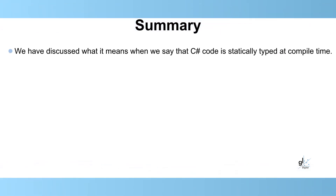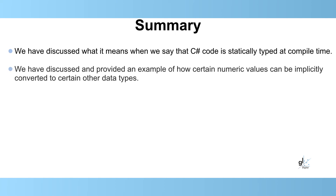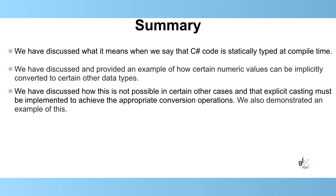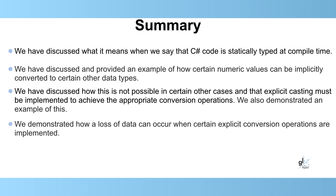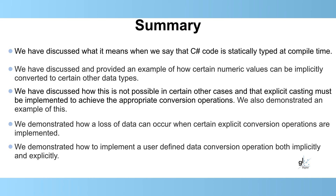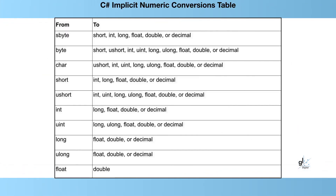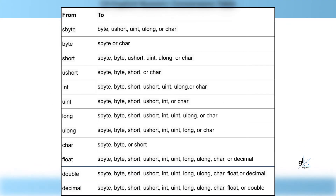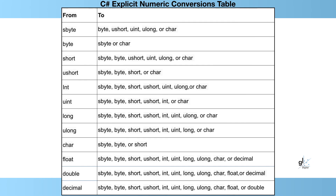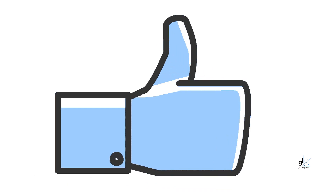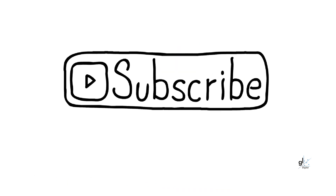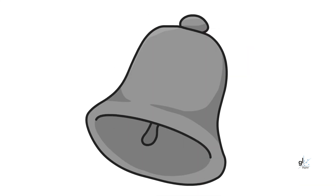We have discussed what it means when we say that C# code is statically typed at compile time. We have discussed how certain numeric values can be implicitly converted to other data types, and how explicit casting must be implemented when implicit conversion is not possible. We demonstrated how a loss of data can occur with certain explicit conversions, and how to implement user-defined data conversions both implicitly and explicitly. Please see the description for supplementary information and GitHub downloads. Please hit the thumbs up if you gained value, subscribe, and hit the bell icon to be notified of future content.